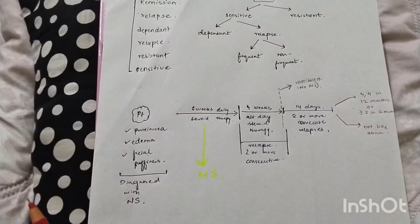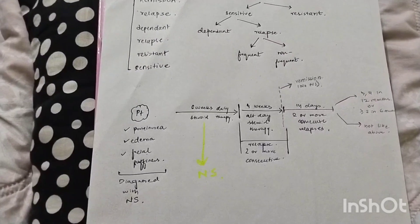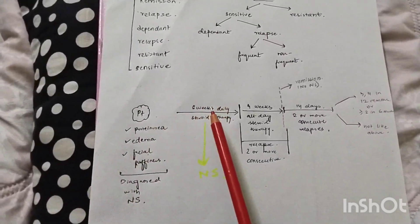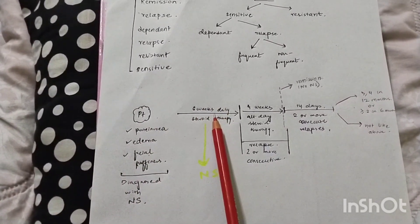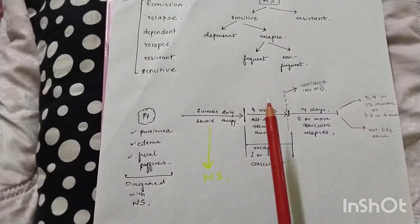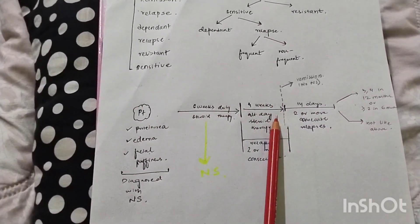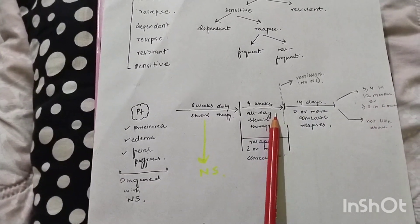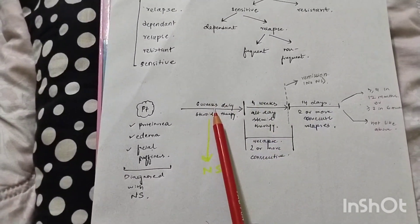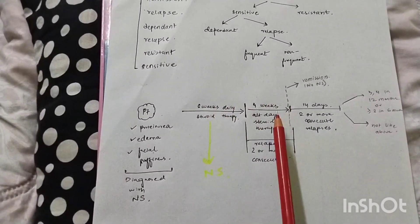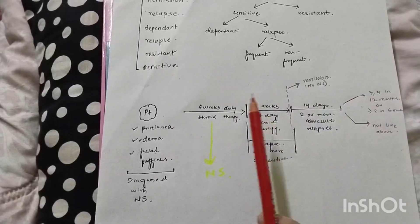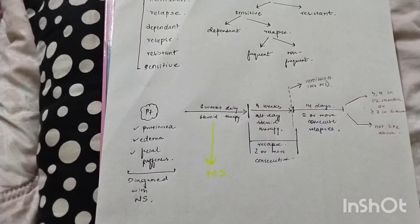So there is a patient and I have started steroid therapy. I give six weeks of daily steroid therapy, and after that the regimen is to give four weeks of alternate-day steroid therapy. After six weeks of daily therapy and four weeks of alternate-day therapy, my treatment course is over.